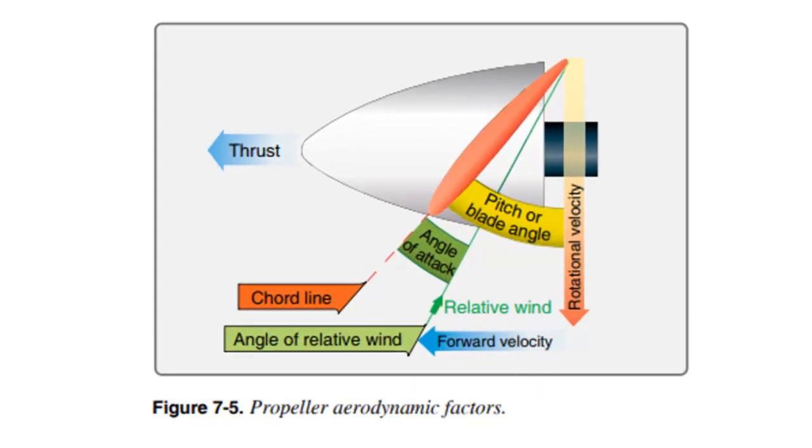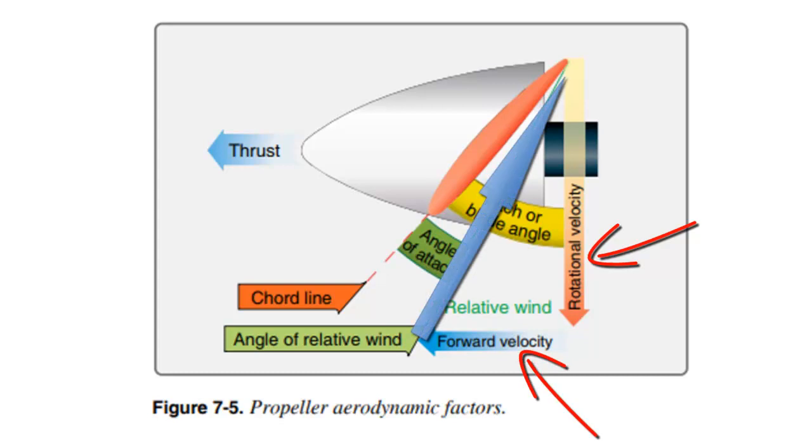In terms of vectors, it looks something like this. We have the rotational velocity represented by this arrow, and we have our forward velocity here, and if you draw a diagonal between those, we get the relative wind. If you take that relative wind and look at the difference between that and the chord line, we get the angle of attack.